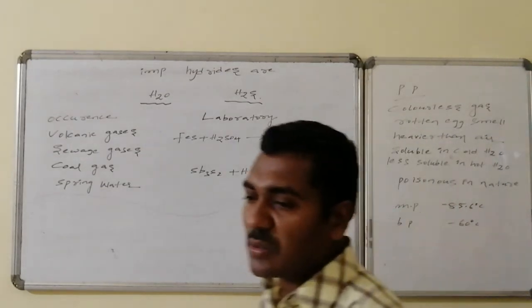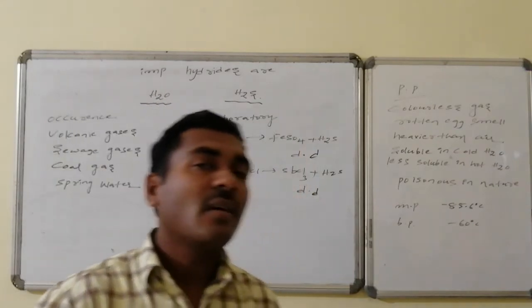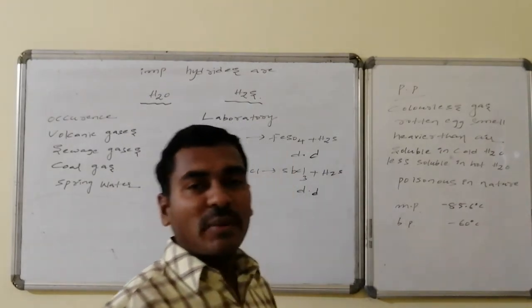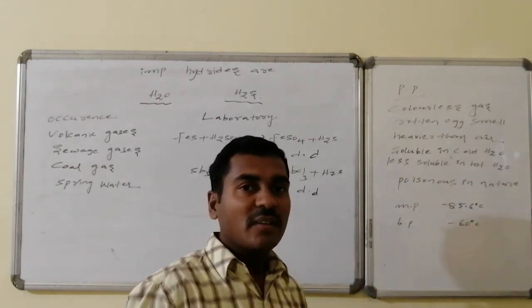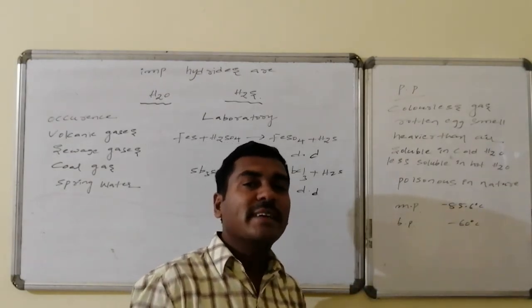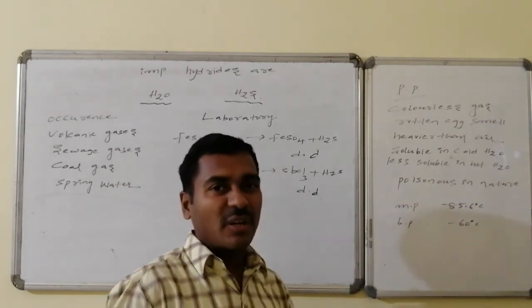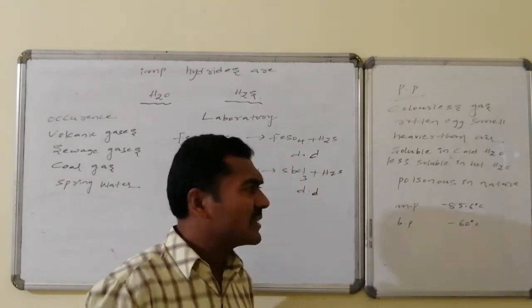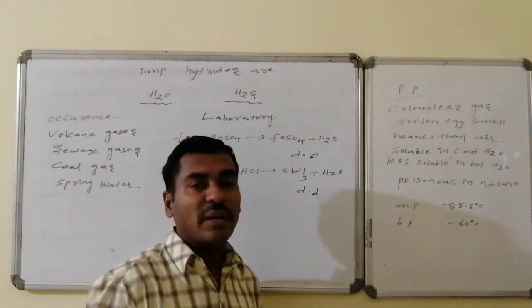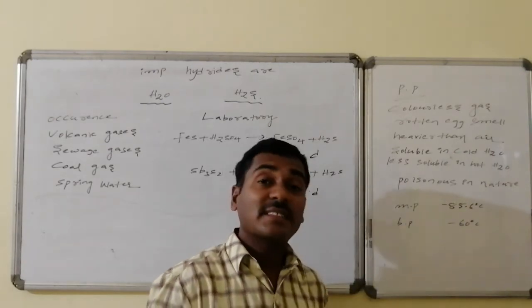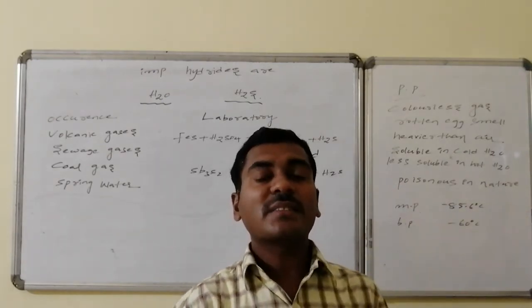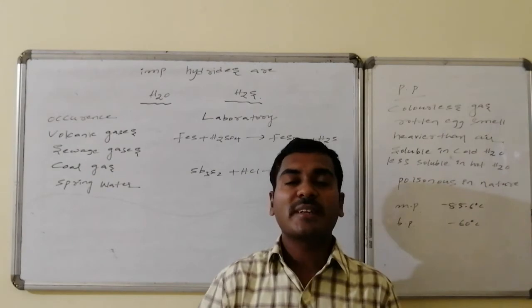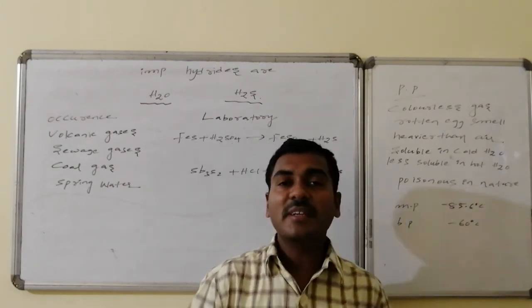Physical properties of H₂S: it is a gas with a foul, rotten egg smell. It is heavier than air due to its higher molecular weight. It is soluble in cold water but solubility decreases in hot water. It is poisonous in nature. Its melting point is −85.6°C and boiling point is −60°C, so it is always in the gaseous state under normal conditions.